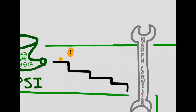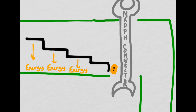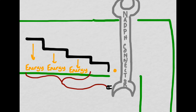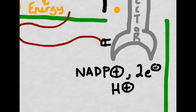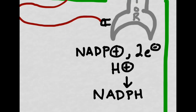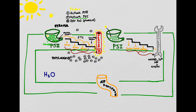The high-energy electron will bounce through the electron transport chain, just like it did previously, releasing energy with every step and ending up a low-energy electron. This time, all of the energy from the second electron transport chain will be used to do something different: the energy will be used to combine NADP+, plus two electrons, and a hydrogen ion in order to form NADPH. Now we've made one of the two major products of the light-dependent reactions, NADPH, which will become very important as we move into the light-independent reactions.